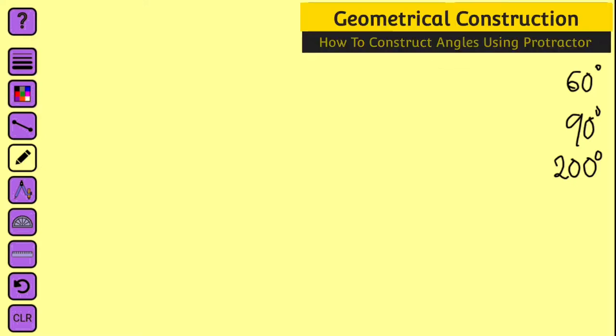Hello, good morning viewers. In our previous lesson we have seen how to measure angles using a protractor. So in today's tutorial we are going to learn how to construct angles using a protractor, and in this tutorial we are only going to be constructing 60, 90, and 200 degrees.